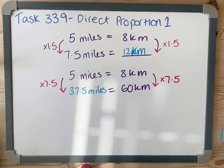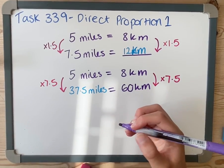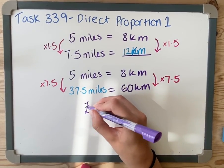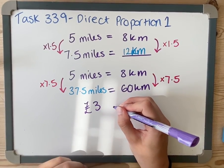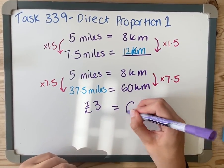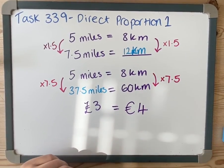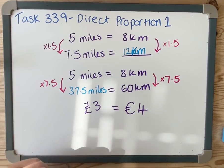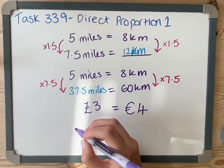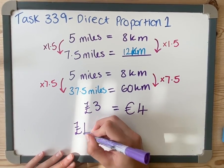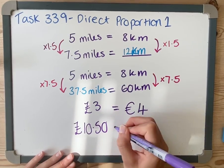One more example very quickly. This one's slightly different because we're actually asked about money. We're told as an estimation that three pounds is roughly four euros, and we're asked to convert £10.50 into euros.